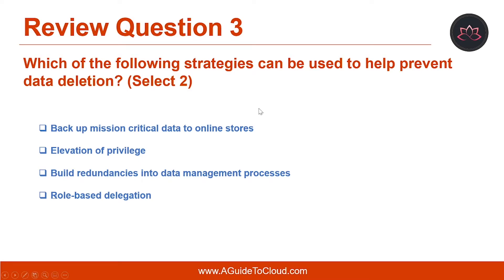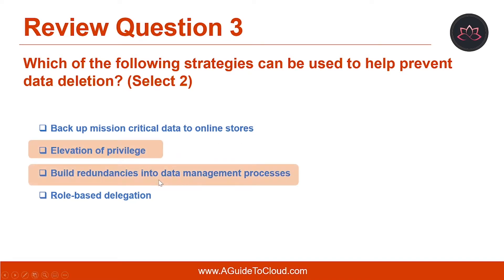Let's look at question number three: which of the following strategies can be used to help prevent data deletion? The correct answers are elevation of privilege and building redundancies into data management processes.